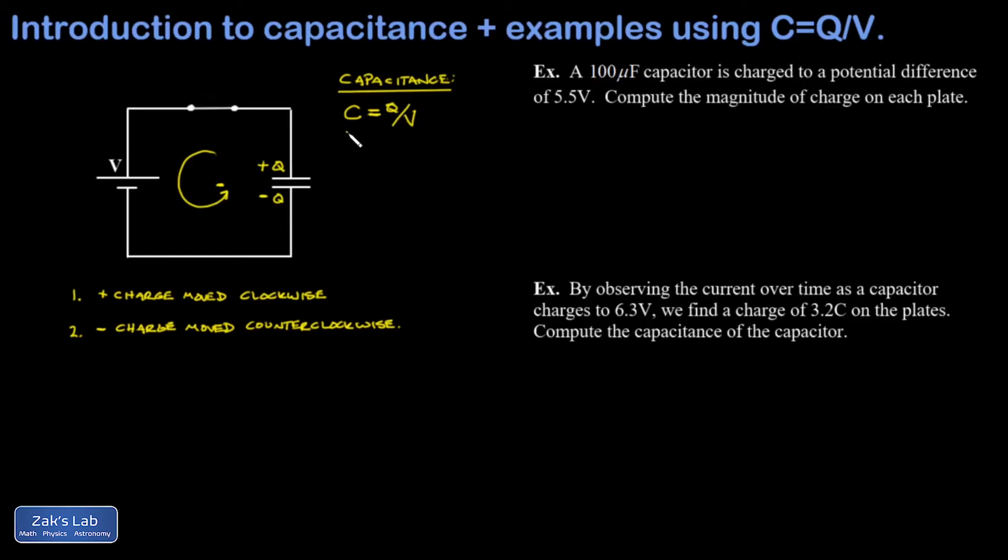If we look at the units of capacitance, it might clarify what I mean a little bit. But the units of capacitance, and be careful, I'm using C in two different ways here. On the left, that's the capacitance. On the right, it's the units of charge, coulombs. Coulombs per volt. These units get a special name. They're called farads.